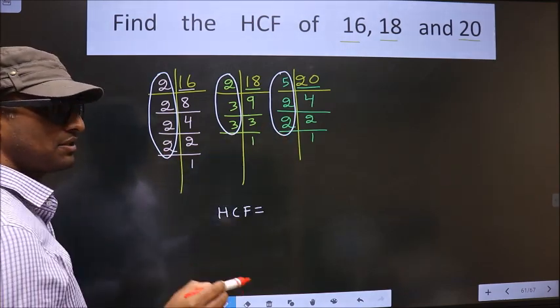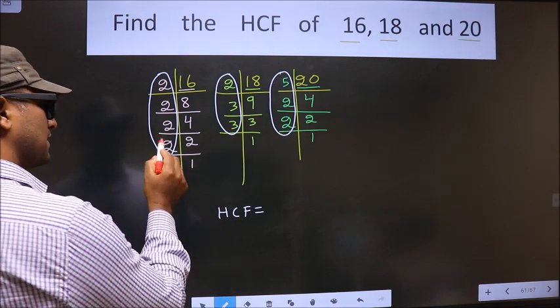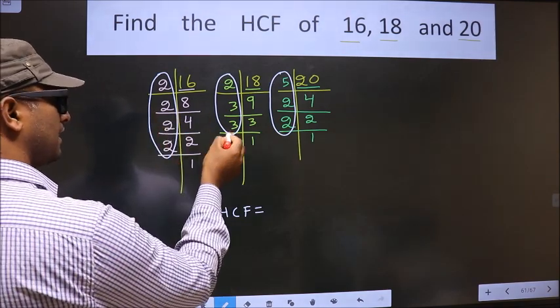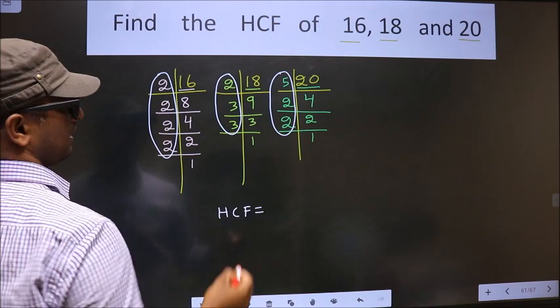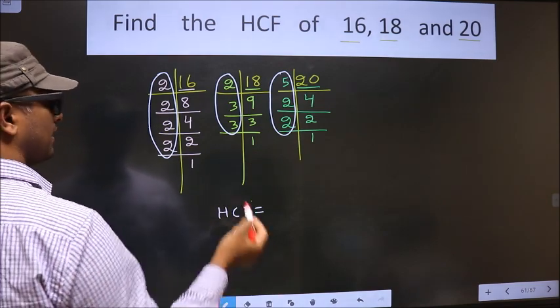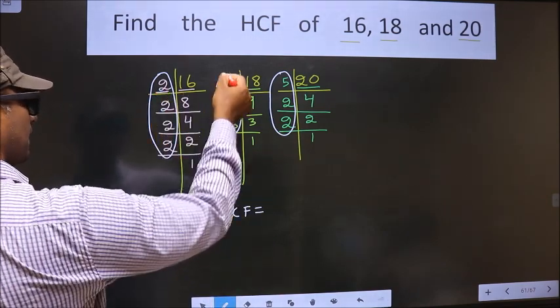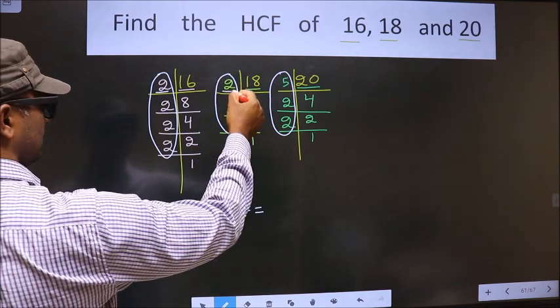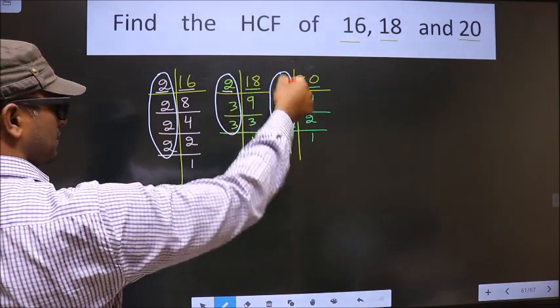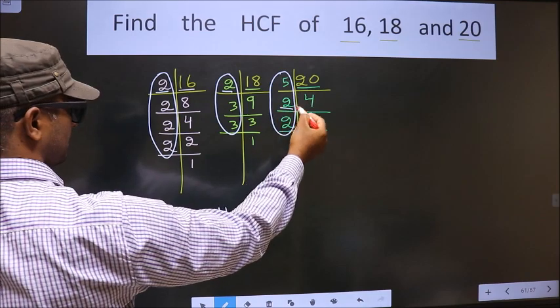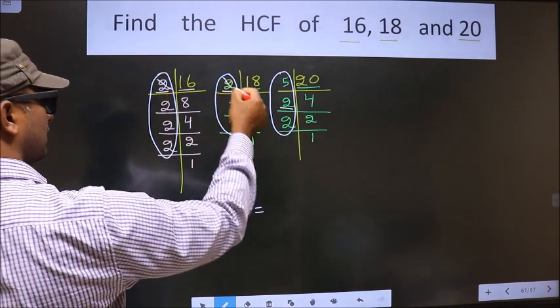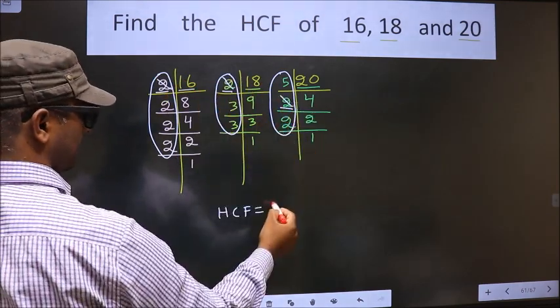I repeat, we should find the numbers that are present here and here and also here. So let us find. Starting with the number 2. Do we have 2 here? Yes. So next place. Do we have 2 here? Yes. So now you cut 2 and write here.